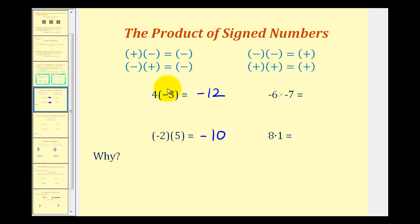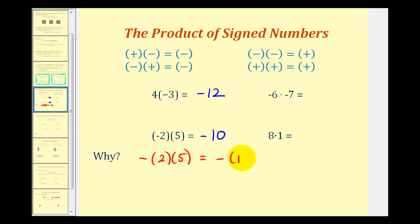Let's talk about why these products are negative. If we consider negative two times positive five, remember we can think of negative two as the opposite of positive two, times positive five. We know that positive two times positive five is positive 10, so this would be the opposite of positive 10, which is equal to negative 10. We could perform the same argument for four times negative three — we could rewrite this as negative three times four.